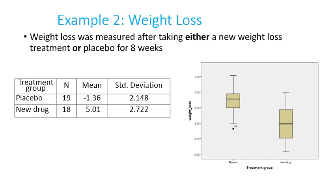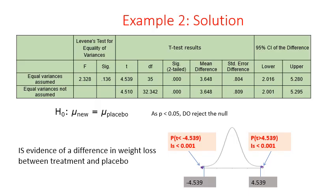Running SPSS on that data, the null hypothesis states there is no difference in weight loss between those in the new drug and placebo groups. Looking at the p-value, it is less than 0.05, so we reject the null — there is evidence of a real difference in weight loss between the treatment and the placebo group.